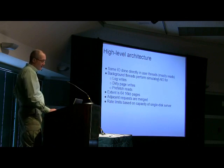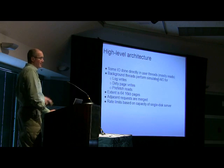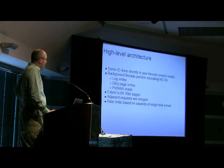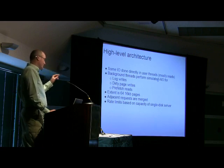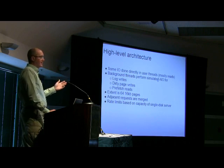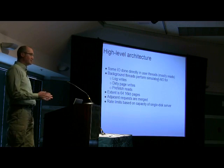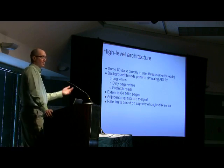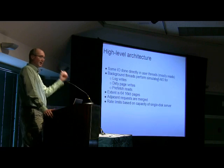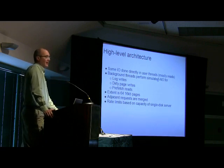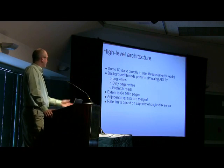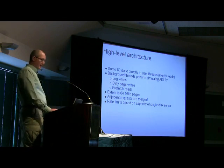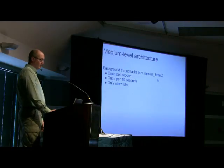A big problem is that there's some rate limiting involved, and the limits are based on the capacity of a single disk server. You'll see code where there are a lot of numbers — 5, 10, 20 — all representing the number of IOs it wants to do at a certain point in time. When you have a system that can do thousands of IOPS, 5 and 10 and 20 doesn't make much sense. You really want that to be 5%, 10%, 20%. That issue has to get resolved to be able to use what's available.